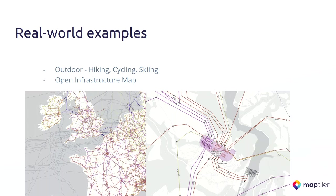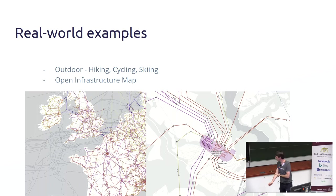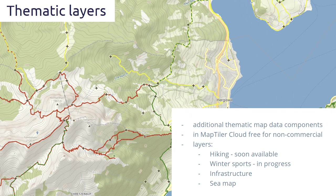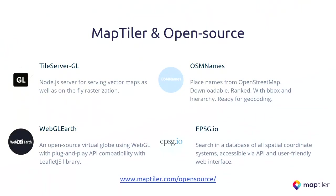Here is the Open Infrastructure Map — this was not done by us unfortunately, but it's really beautiful. They use it for showing all the electric infrastructure and so on. What we are working on right now is a hiking map. This is not the only thing we are working on — we have other open source projects. The full list is on maptile.com/open-source.